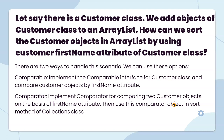Suppose there is a Customer class and we add objects of Customer to an ArrayList. How can we sort the Customer objects by the customer's first name attribute? There are two options: first, implement the Comparable interface in the Customer class and compare Customer objects by the first name attribute; second, implement a Comparator that compares two Customer objects on the basis of the first name attribute, then use that Comparator object in the sort method of Collections.